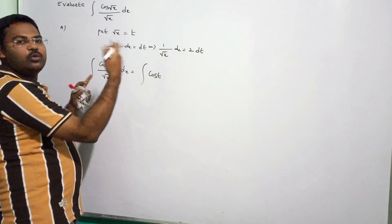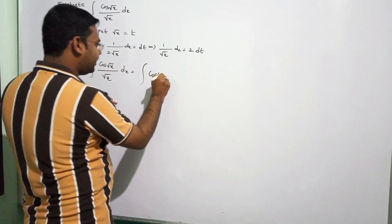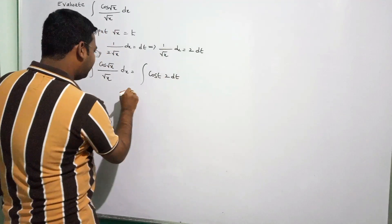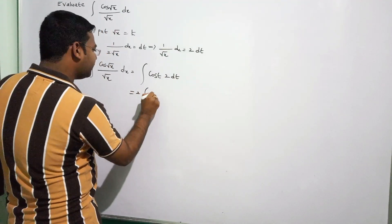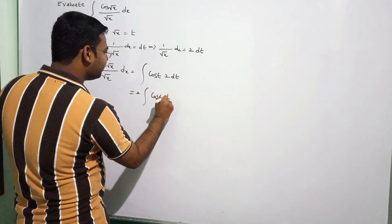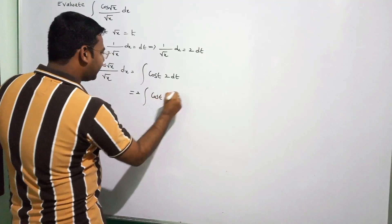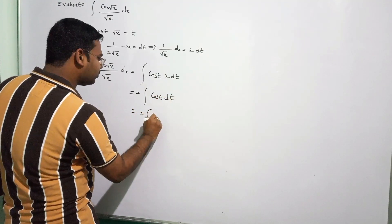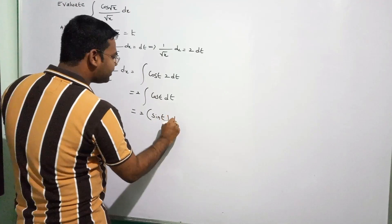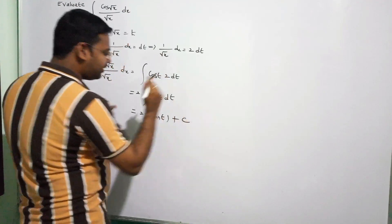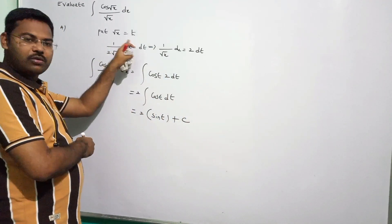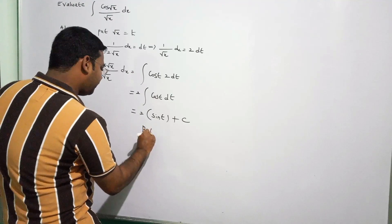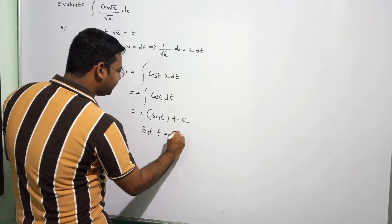So 1/√x · dx = 2dt. Taking 2 outside as a constant, we get 2 · integral of cos(t) dt. Integration of cos(t) is sin(t) + c. Now substitute back: t = √x.